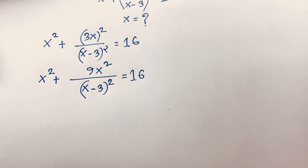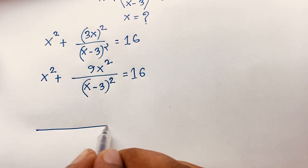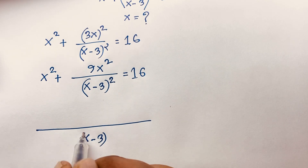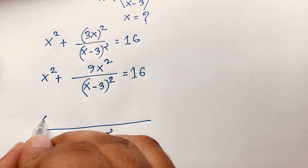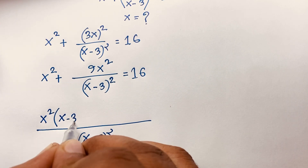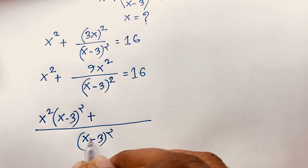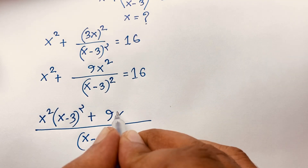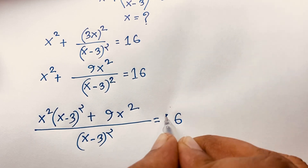Now the least common denominator is (x - 3)², so multiplying through by (x - 3)². This gives x² times (x - 3)² plus 1 times 9x², so 9x² equals 16.